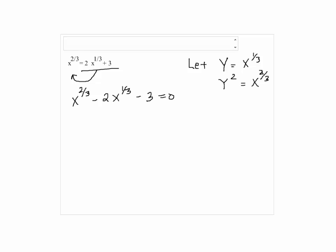So, we're going to rewrite the equation in terms of y's so we have y squared minus 2y minus 3 equals 0. So, we can easily factor the left-hand side.